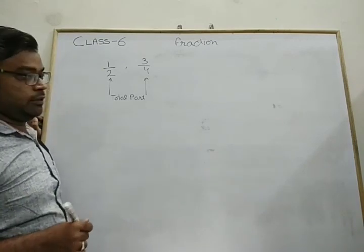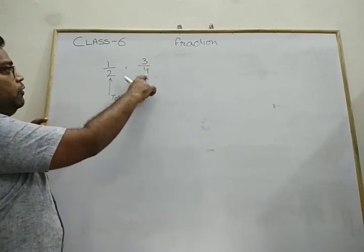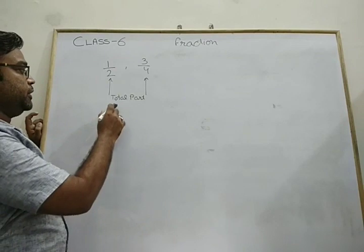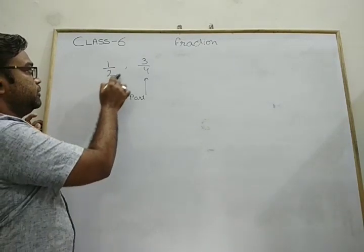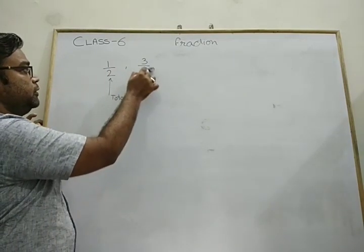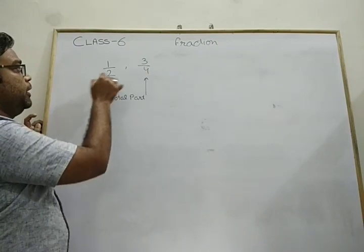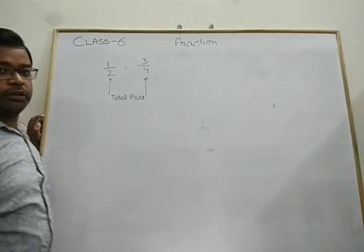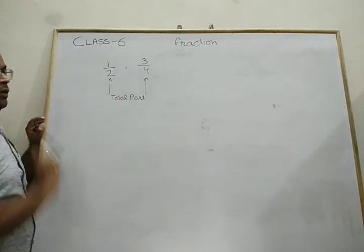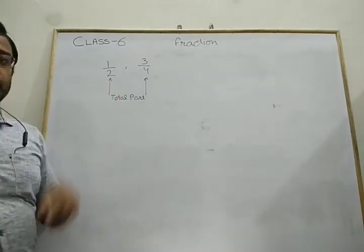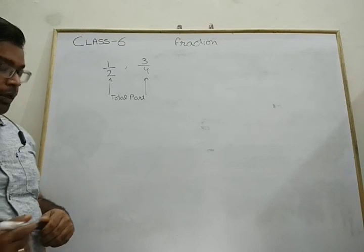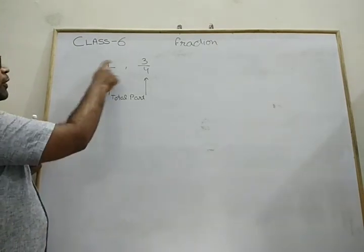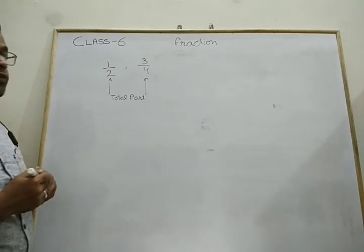In a fraction, the bottom part is always greater because it represents the total number of parts. Out of this total, we need a certain number of parts — that is the top number. So in 1/2, two stands for the total parts and one stands for the required part; in 3/4, four is total and three is required.